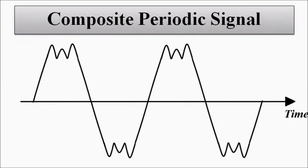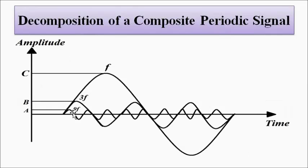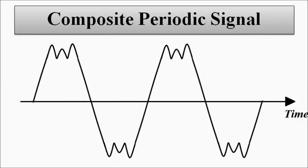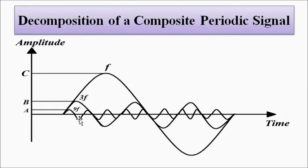Then the middle peak corresponds to a simple sinusoidal signal with minimum amplitude A. How many complete oscillations are there in one time period? 1, 2, 3, 4, 5, 6, 7, 8, 9 — so it has a frequency of 9F. Here we have decomposed this composite signal into its individual constituent simple sinusoidal signals.